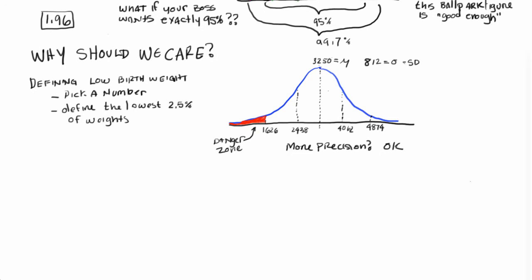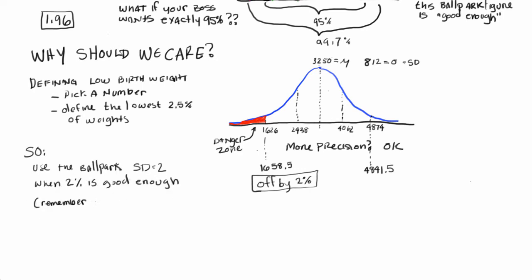Now, if you want more precision, we can use the 1.96 value, and that's going to give us 1658.5, and the difference between these two, it's off by about 2%. So, we can use the ballpark standard deviation of 2 when 2% is a good enough figure.